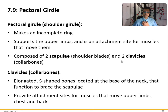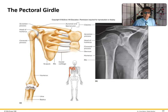The clavicle is one of the most commonly fractured bones in the body. So here is the scapula, the humerus, and the clavicle. Again, the sternoclavicular joint — where the sternum and clavicle meet — is the only real bony attachment your upper extremity has to your trunk; everything else is held together by muscles and ligaments.